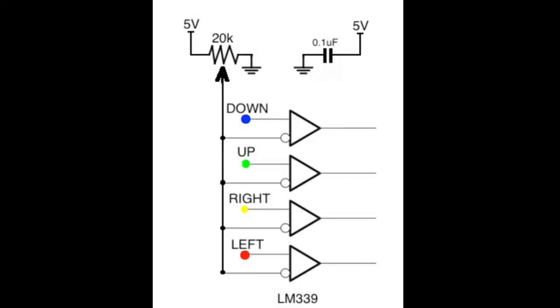To the right, an LM339 quad comparator. I've drawn the individual comparators here, all their V-in negative inputs are tied together and to the terminal of the wiper of a 20k PCB pot.